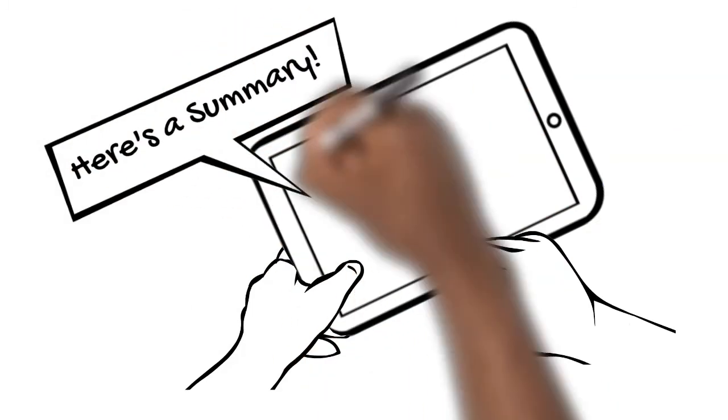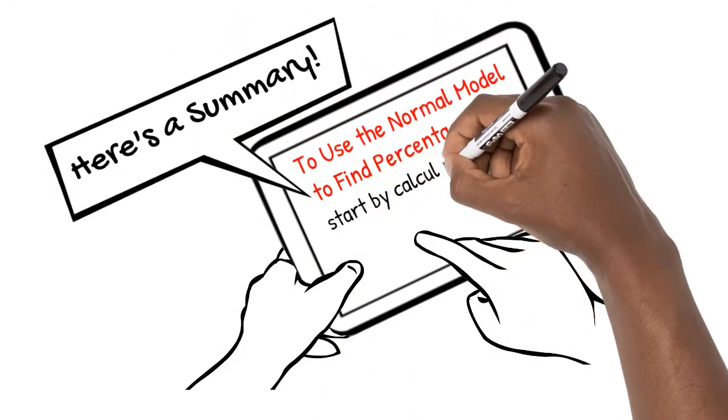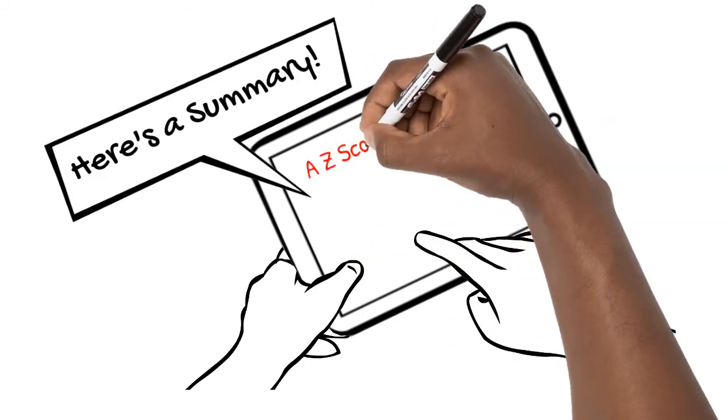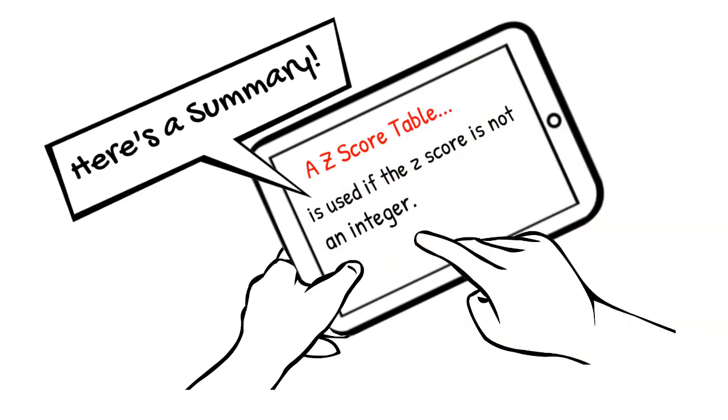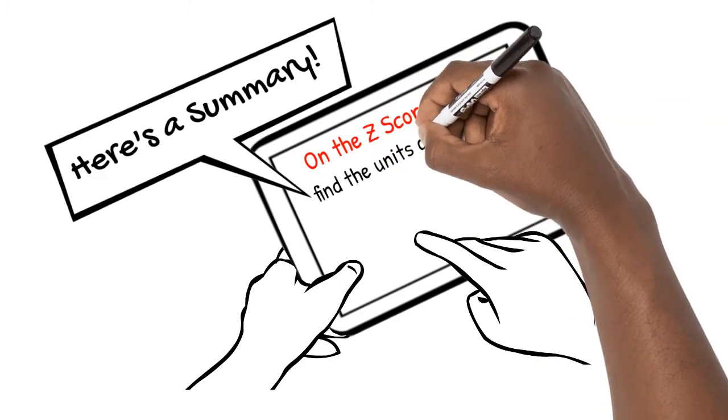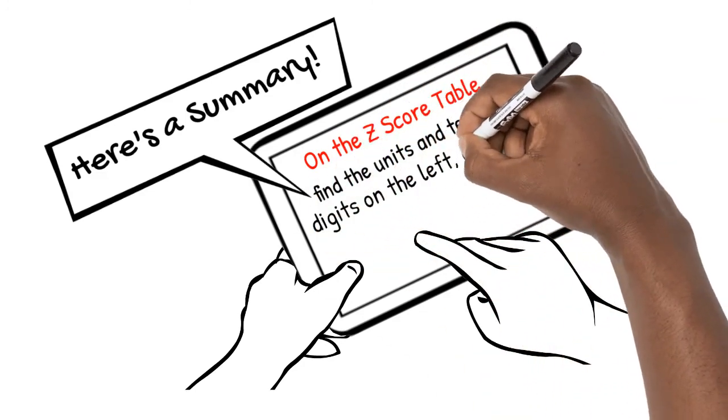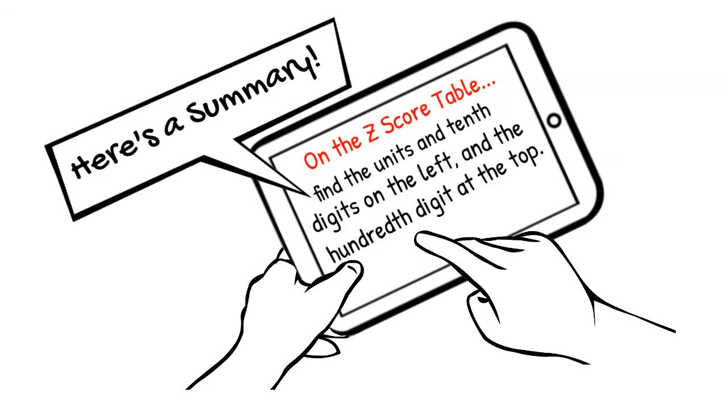Here's what we've learned. To use the normal model to find percentages, start by calculating the z-score. A z-score table is used if the z-score is not an integer value. On the z-score table, find the units and tenth digit on the left side of the table and the hundredth digit at the top of the table.